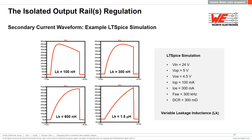Here we have a SPICE simulation with a typical specification illustrating the dependence of the secondary current wave shape on leakage inductance. As leakage inductance increases — from 100 nH to 300 nH to 600 nH and 1.5 µH — the wave shape moves from a parabolic shape to a more first-order rising slope or triangular waveform.